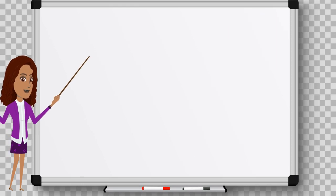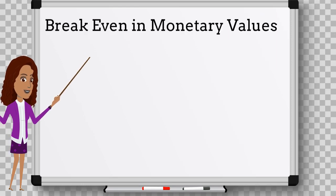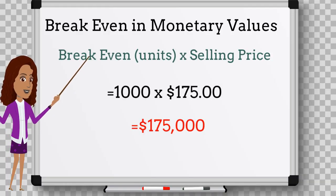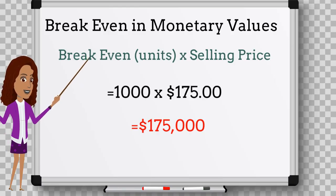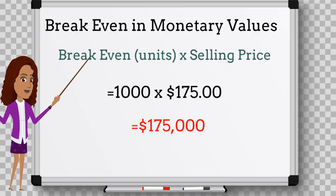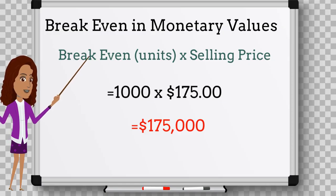We can also express the break-even point in monetary values. All we need to do is multiply the break-even in units by our original selling price. Using our same example, we multiply 1,000 by $175, giving us a break-even in monetary values of $175,000.